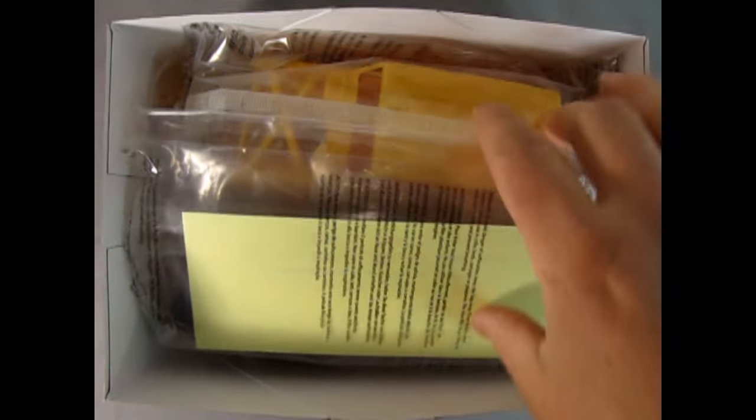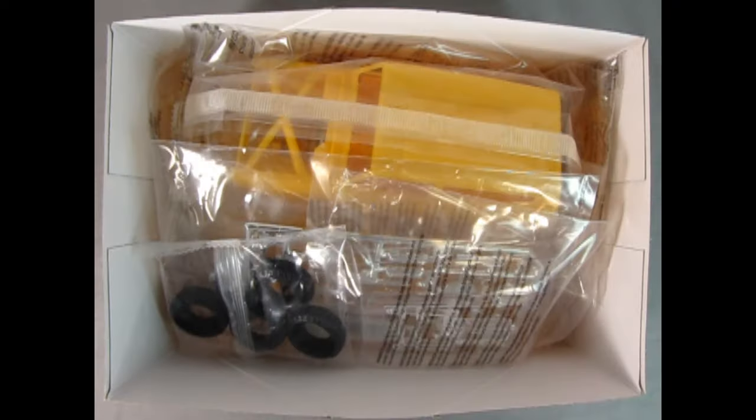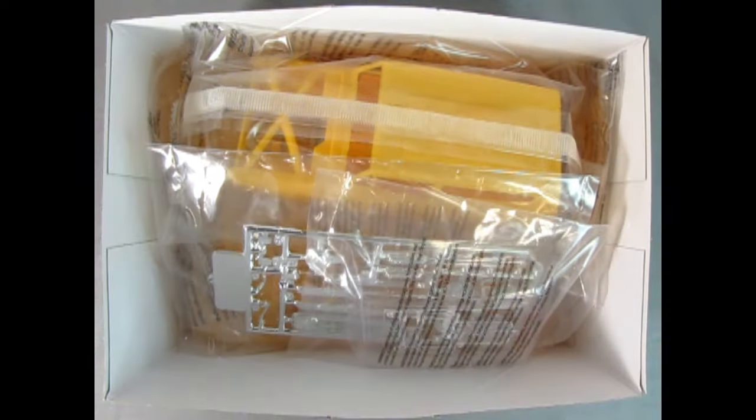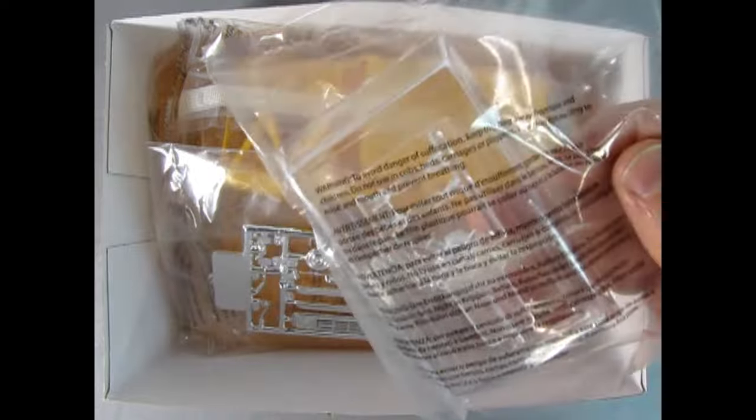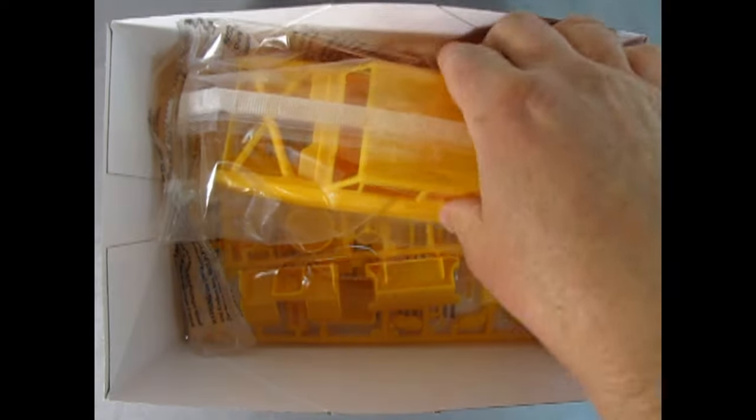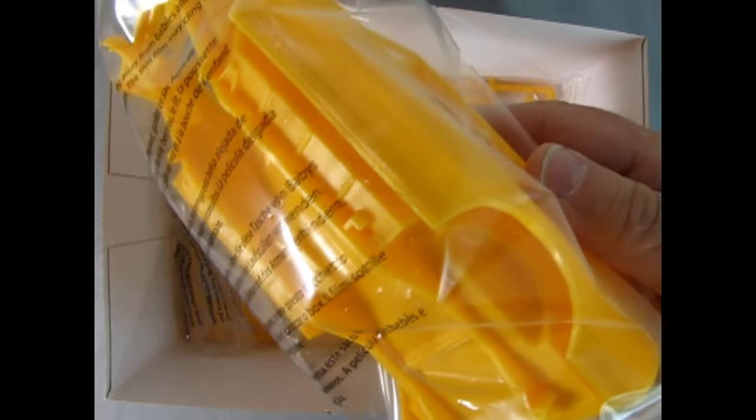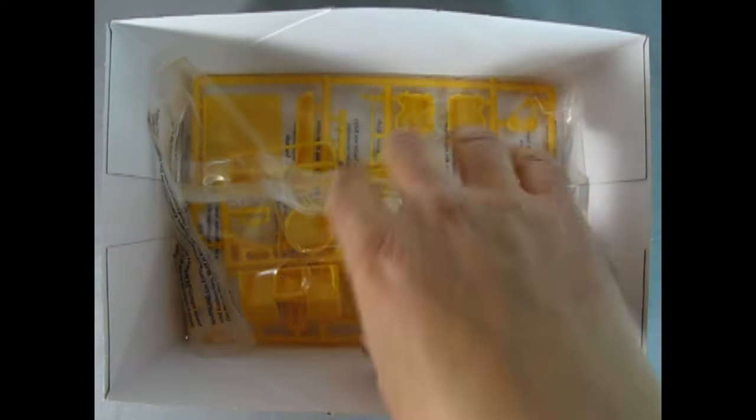Right away, we've got the instructions, which we'll take a look at in a minute. We have the decal sheet, we also have our tires in the bag, we've got our glass here, we have the chrome, wonderful chrome. Then we have the body, the interior and the undercarriage, and then we've got a nice bag full of yellow plastic components.